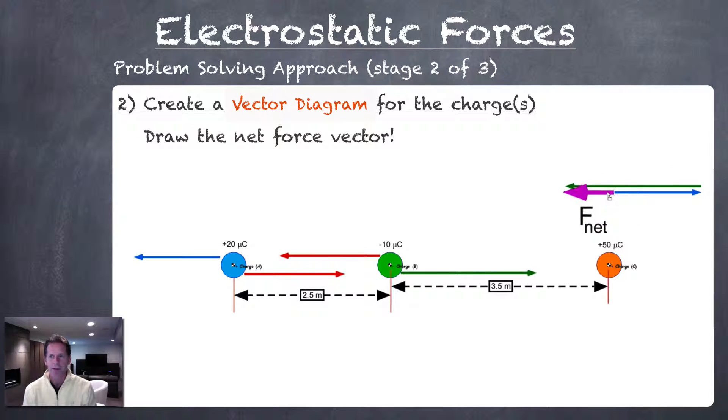Our resultant net force vector would be from where we start to where we finish. So the positive 50 microcoulomb charge should be pushed to the left slightly. Repeating that process for the negative 10 microcoulomb charge, by adding the vectors together, the net force would be to the right. The negative 10 microcoulomb charge would have a net force towards the right.